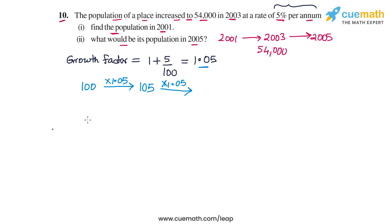So what we'll do is first to find the population in 2001, we will assume that the population in 2001 is x. Now, this means that the population in 2002 will be x times the growth factor or 1.05x, and the population in 2003 will be again 1.05 times this number. So 1.05 square times x.